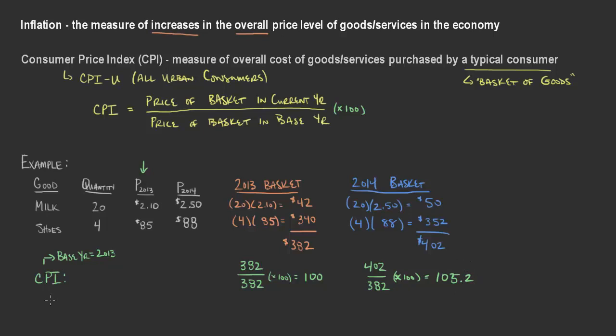Now we've got an index — the consumer price index for that year. That number alone doesn't really tell us anything unless we have something to compare it to. What it does tell us is that compared with the base year, prices have increased 5.2%. This goes back to what we've talked about with inflation: inflation is the measure of the increase in overall price level. When things are based in 100, the price increase from 2013 to 2014 is 5.2%. The inflation rate is the percent change in price index from the previous period.